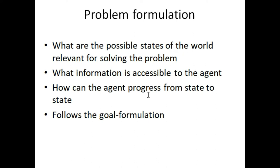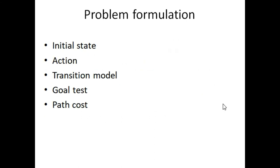It then follows goal formulation. During problem formulation, we cover these main points. The first point is the initial state — we should know where we start from. Then the action — what actions are possible. Then the transition model, the goal test, and the path cost. All of these points will be discussed in our future slides using examples.